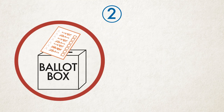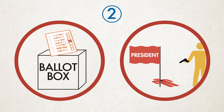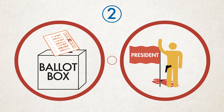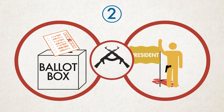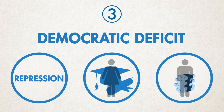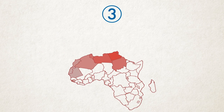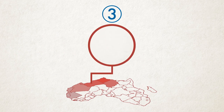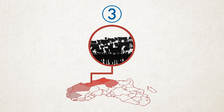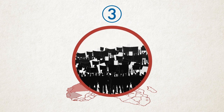Transitions from autocracy to democracy, or adverse regime changes, are often prone to violence. A large democratic deficit translates into a risk of instability. In the Arab Spring countries, citizens' demand for democracy was vastly at odds with the actual supply.